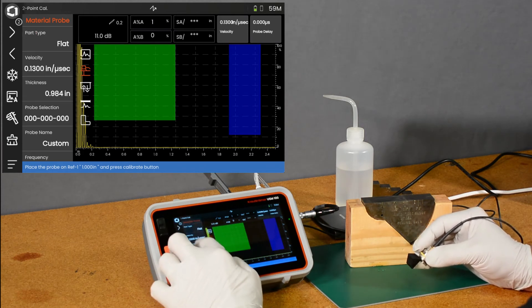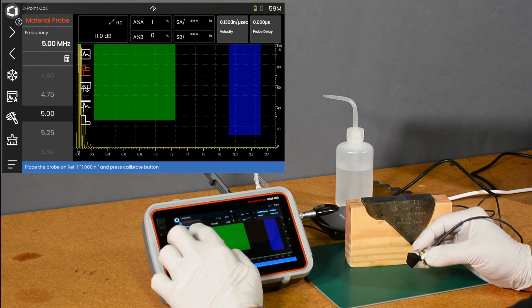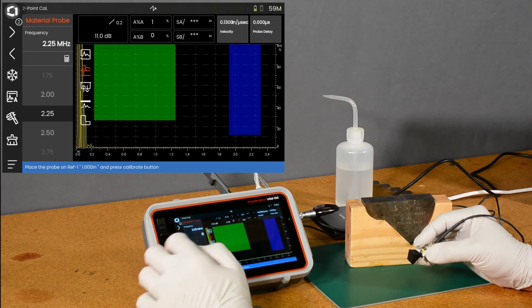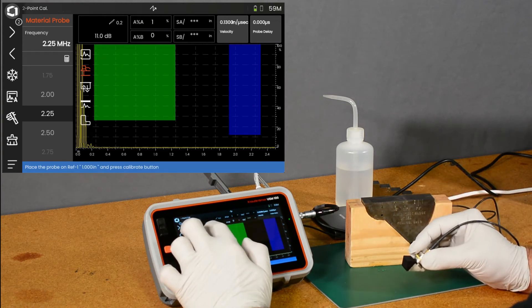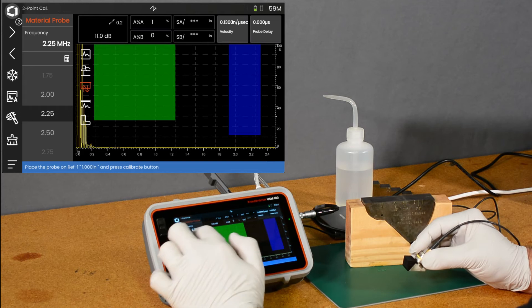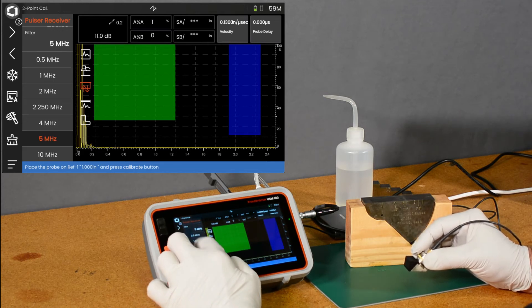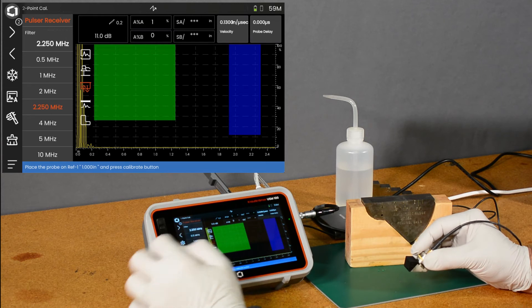Let's take a look at our probe frequency. We'll set that to 2.25 to better optimize the pulsar for this probe. And we're going to go to the pulsar receiver menu, and we'll change our filter to two and a quarter megahertz.